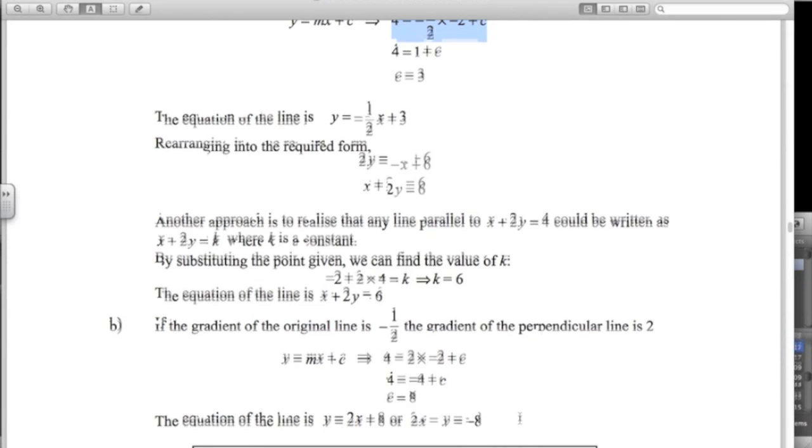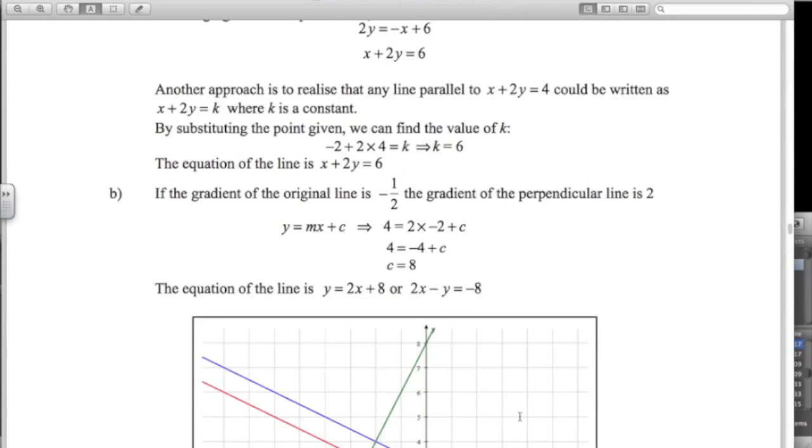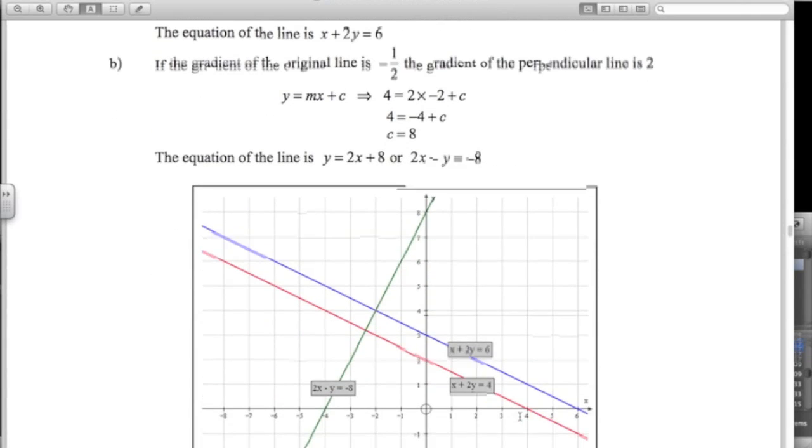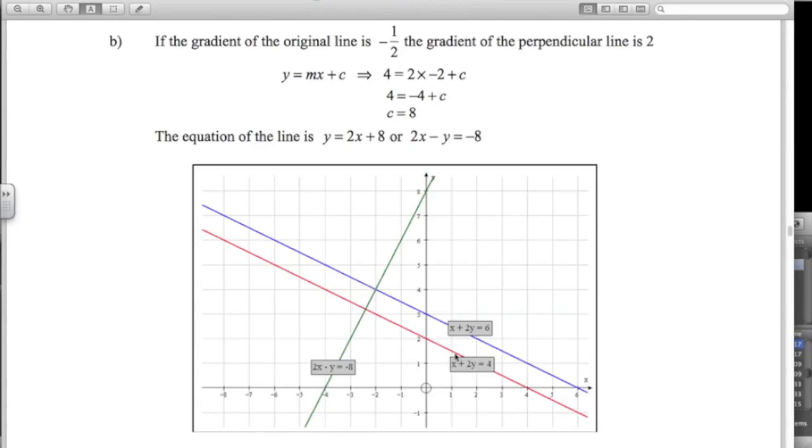There we go. And here's the picture of those three lines. Our original 1x plus 2y equals 4. You can see the gradient is negative 1.5 down 2 across 4. So negative 1.5. Here's the line parallel to it in blue. That's the answer to part a. And here's our answer to part b. Clearly perpendicular to the other line.